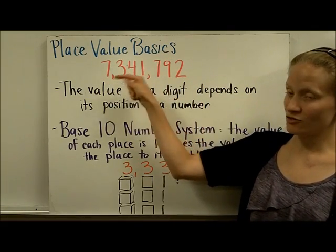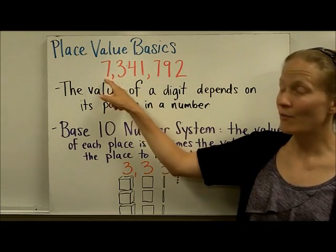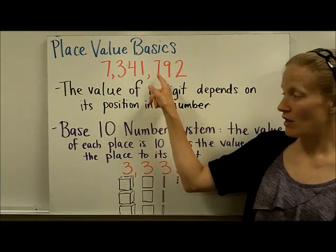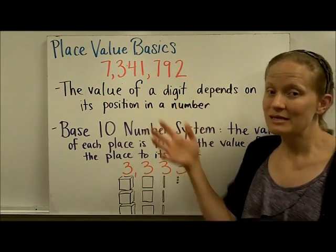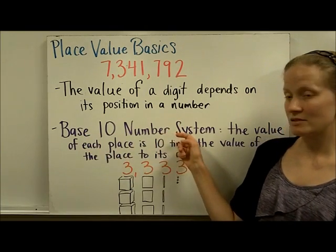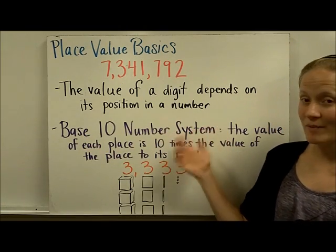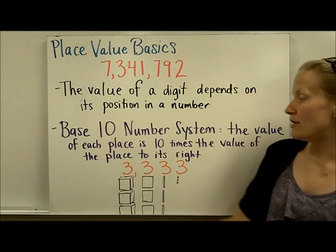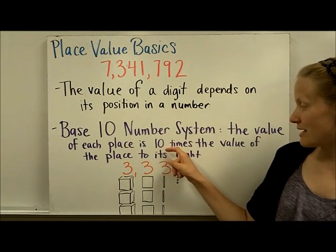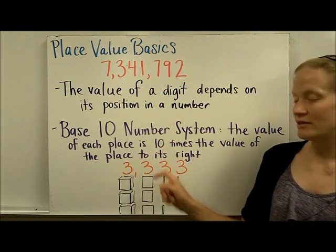Because this 7 is much further to the left, it's worth a lot more than this 7 is worth. And this whole idea is based on the base 10 number system. In our base 10 number system, the value of each place is 10 times the value of the place to its right.